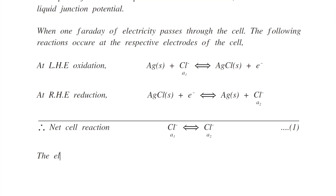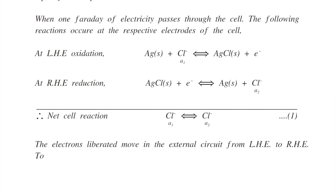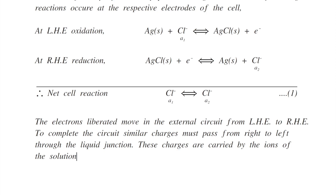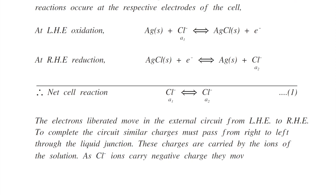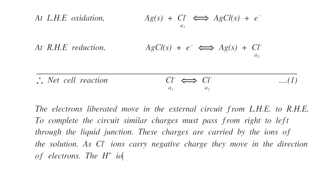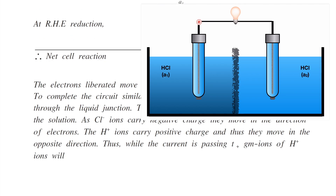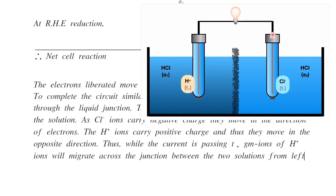The electrons liberated move in the external circuit from the left-hand electrode to the right-hand electrode. To complete the circuit, similar charges must pass from right to left through the liquid junction. These charges are carried by the ions of the solution. As chloride ions carry negative charge, they move in the direction of electrons. T+ gram ions of hydrogen ions will migrate across the junction from left to right.